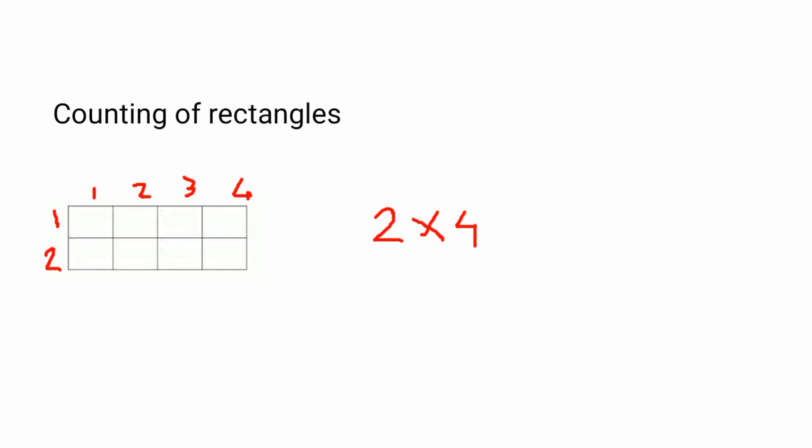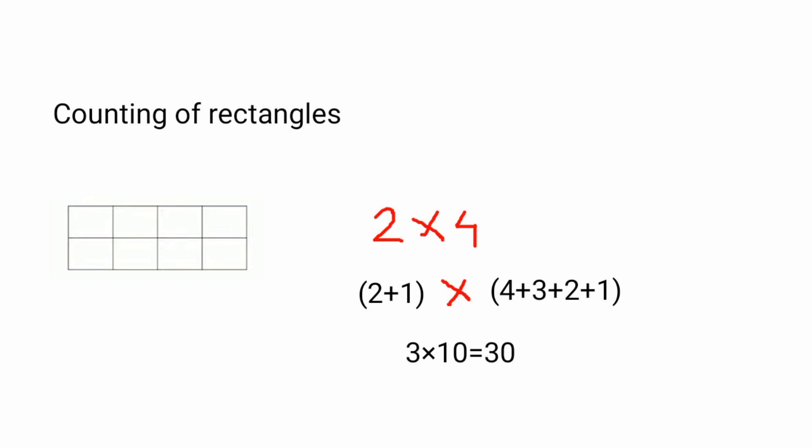Take the first number, two, and add all counting numbers up to two: that is two plus one. The next number is four — add all counting numbers up to four: four plus three plus two plus one. So two plus one equals three, and four plus three plus two plus one equals ten. Three multiplied by ten is thirty. So you get the total number of rectangles as thirty.